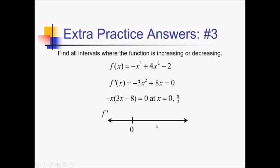We've got 0 and 8 thirds. Now let me test around those. Something to the left of 0 — let's try negative 1. Plugging that into negative x, that becomes positive, and in here that's going to give us a negative, so positive times a negative is a negative. Next, between 0 and 8 thirds, I'm going to test 1 — that's going to be a negative times another negative, giving me a positive. And something bigger than 8 thirds — I'm going to try 3 — that's going to be a negative and a positive, giving me a negative.